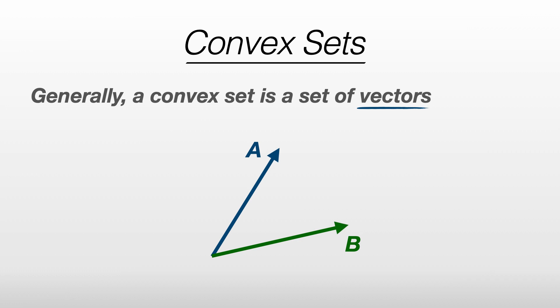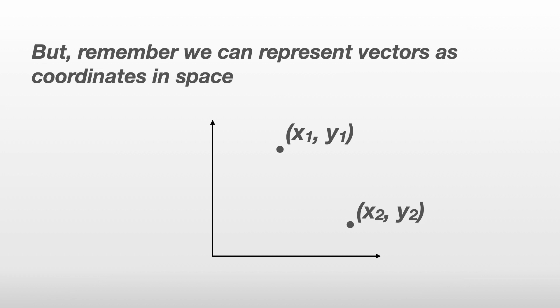Let's talk more generally about convex sets. Note that generally a convex set is a set of vectors or something which can be represented as vectors. This includes coordinates or points in space.